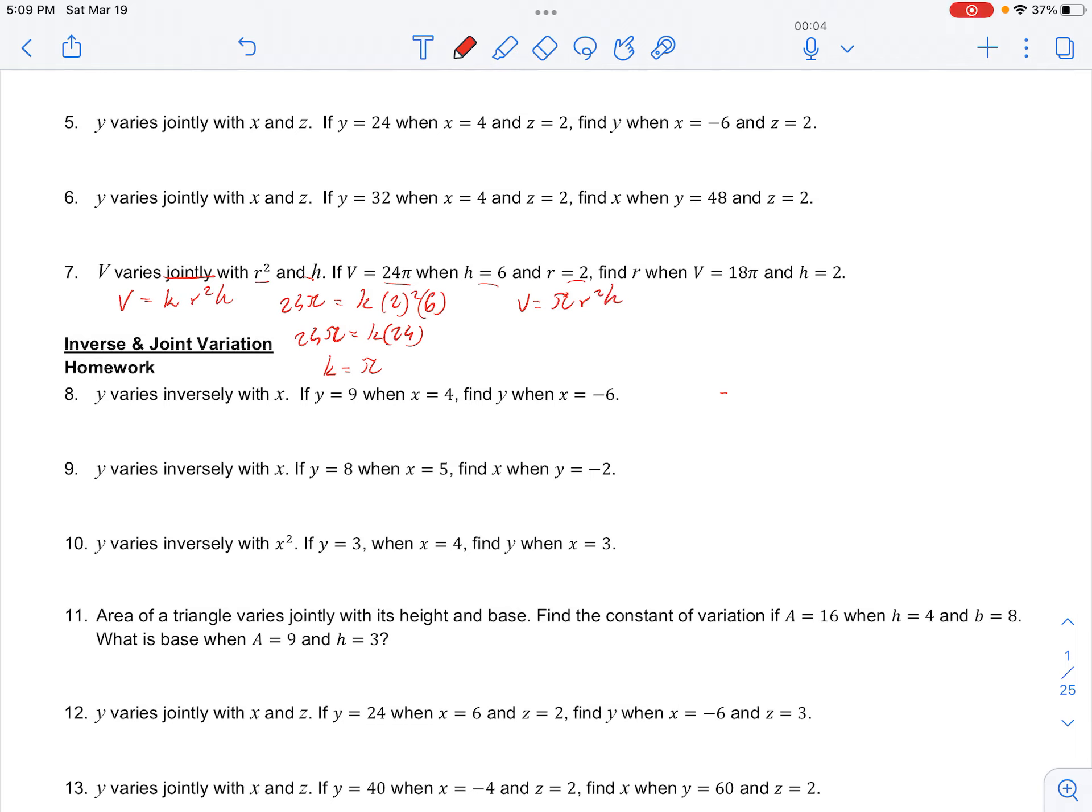And now we can find r when we have volume and h. So we write this as 18 pi is equal to pi times r squared, and h is 2. So we can cross out pi on both sides. And dividing by 2, we get that 9 is equal to r squared.